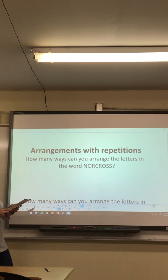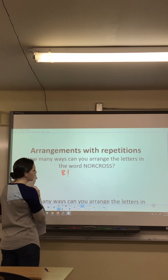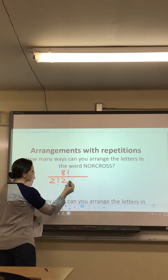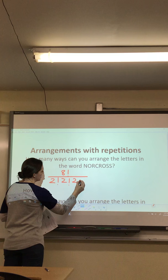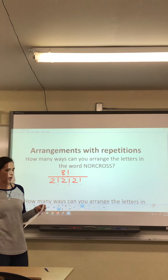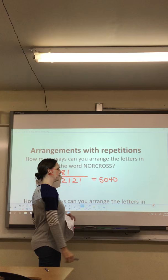Let's try Norcross. It has eight letters, so we start with 8 factorial. Then we take out the repeats: two O's means divide by 2 factorial, two R's means divide by another 2 factorial, and two S's means divide by another 2 factorial. So it's 8 factorial divided by 2 factorial times 2 factorial times 2 factorial. Note you may need parentheses in the denominator. You should get 5,040.